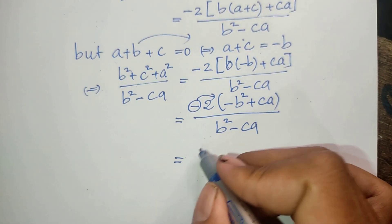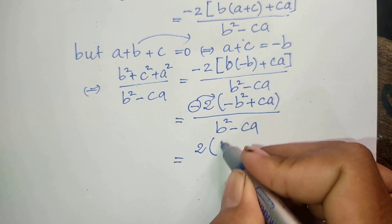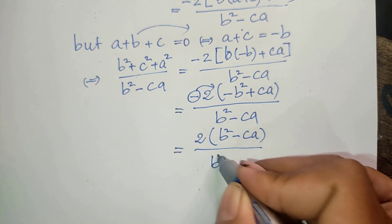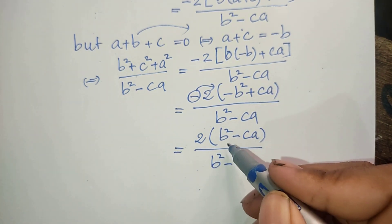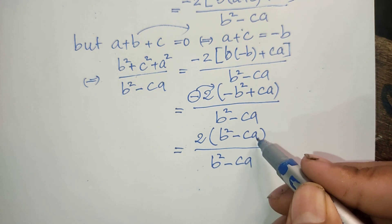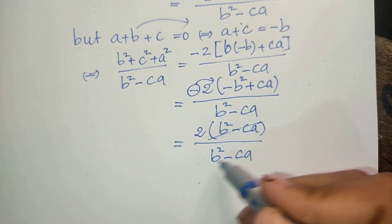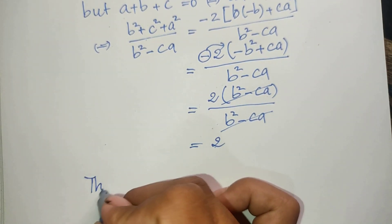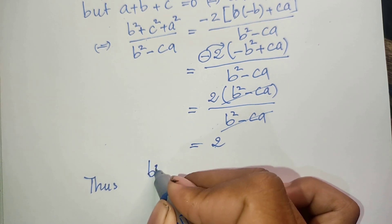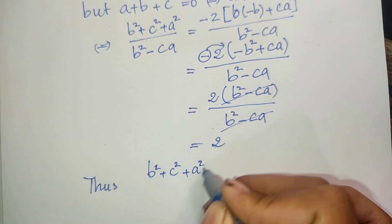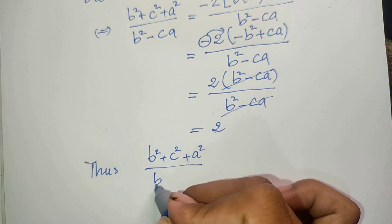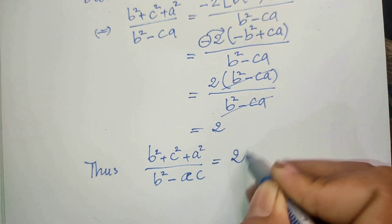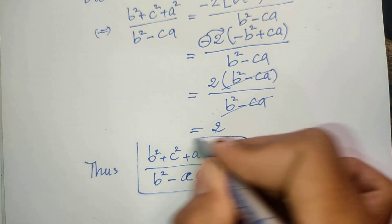So we now have 2 times b squared minus ca, divided by b squared minus ca. The factor b squared minus ca cancels top and bottom, giving us the final answer of 2. So the value of a squared plus b squared plus c squared divided by b squared minus ca equals 2.